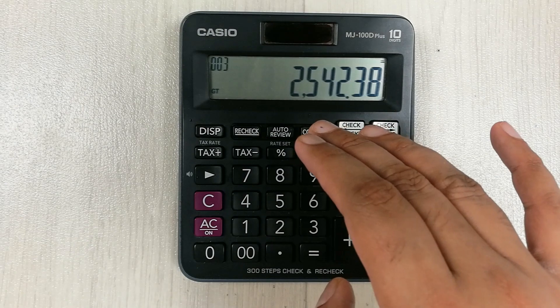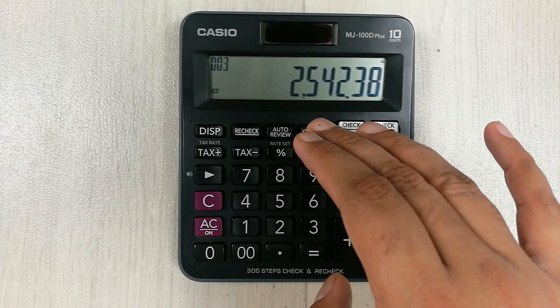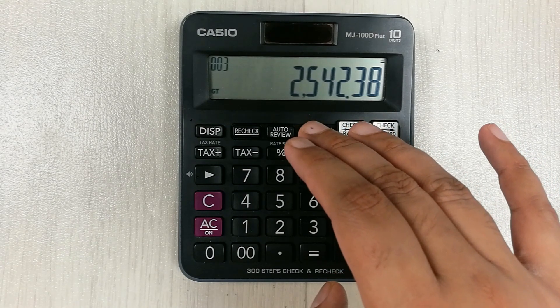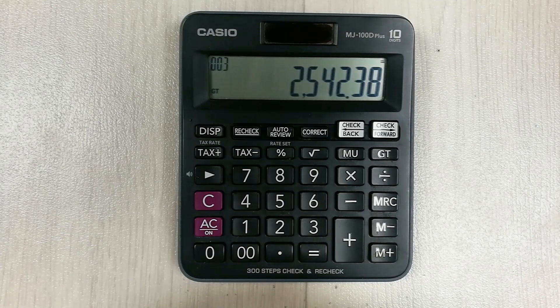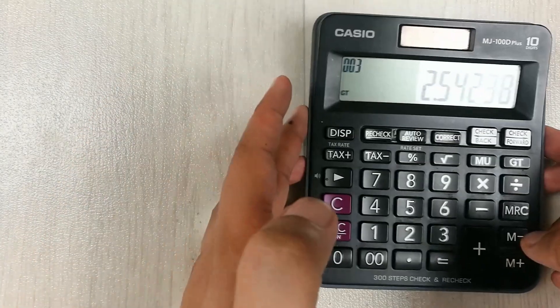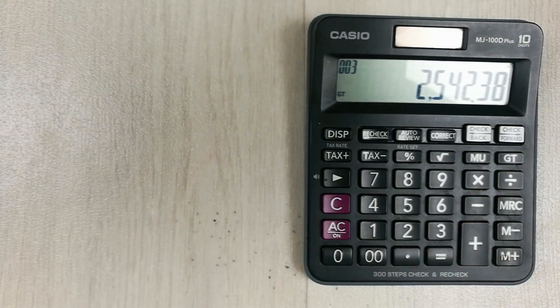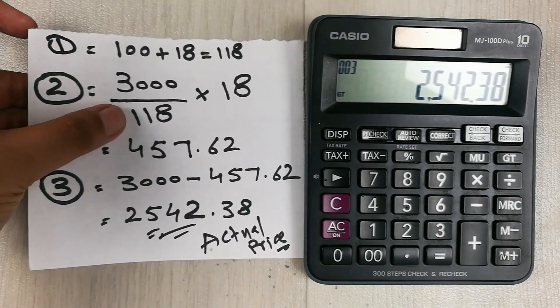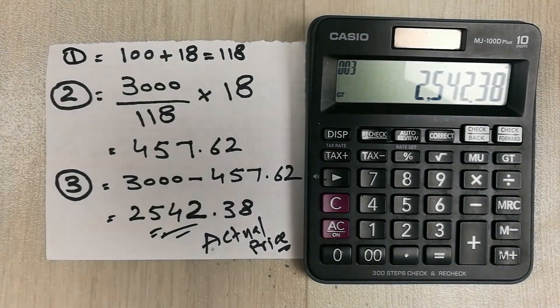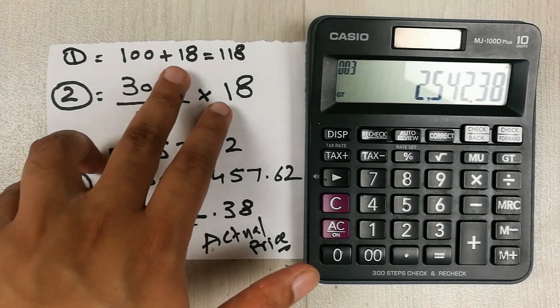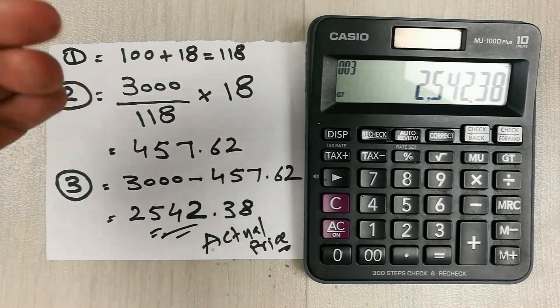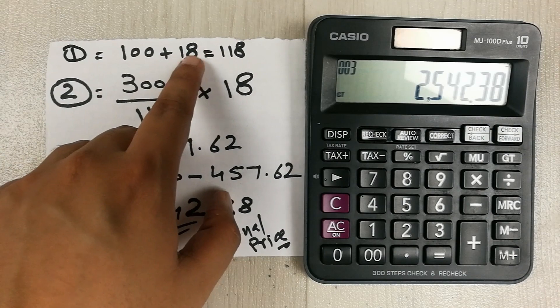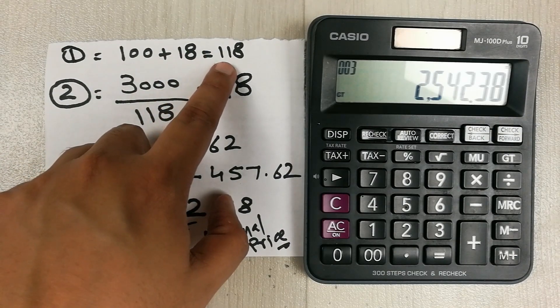So guys, this is our actual price before that GST which was 18 percent. I will also show you in the written form. So I write it here in three step process. First we add 100 with 18 because our GST was 18, so the answer comes 118.